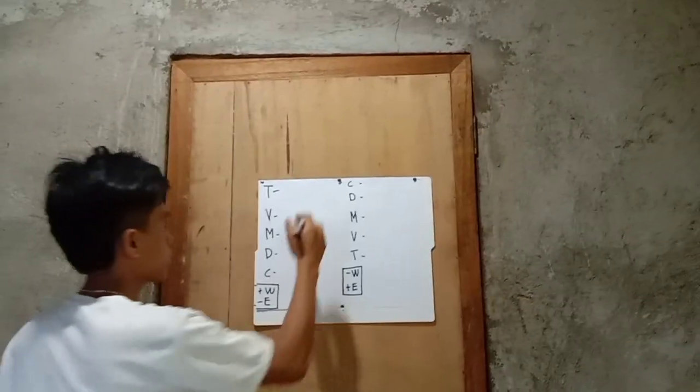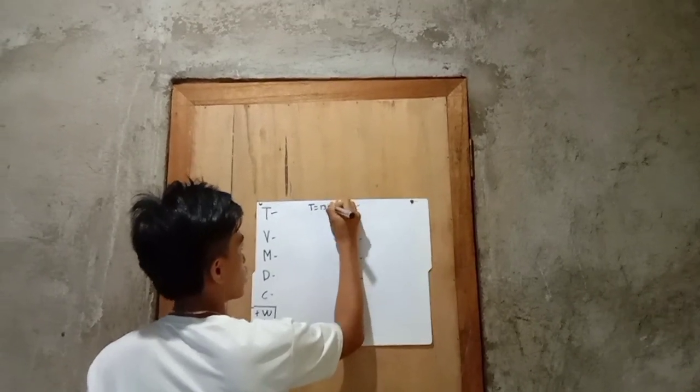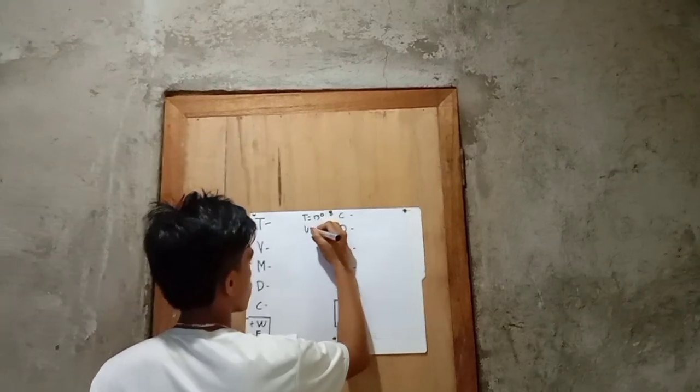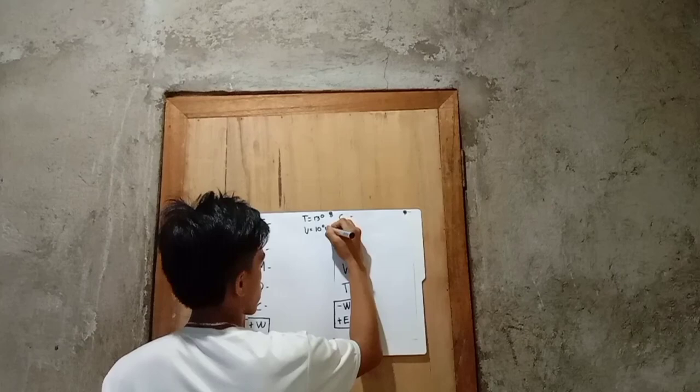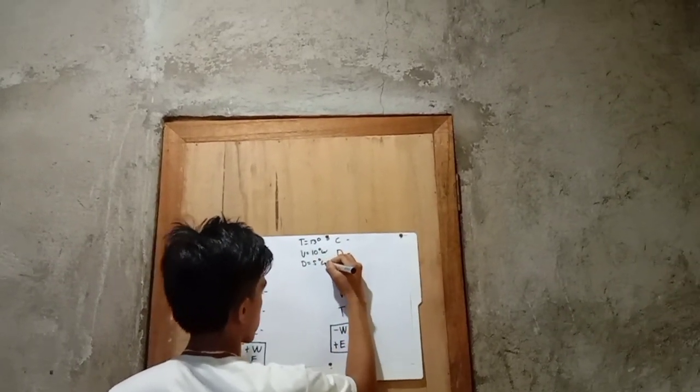So, our true course is 130 degrees, while variation is 10 degrees west, and our deviation is 5 degrees east.